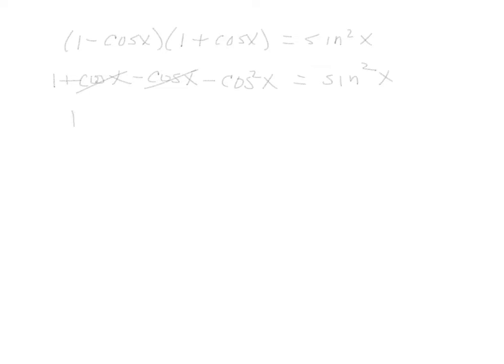So we would be left with 1 minus cosine squared x, and that's equal to what we have on the right. Let's trade from our formula because we want to get to the right side where there's a sine. Let's trade in cosine. So we have 1. Cosine squared from our formula page is 1 minus sine squared. That comes from the Pythagorean identities.